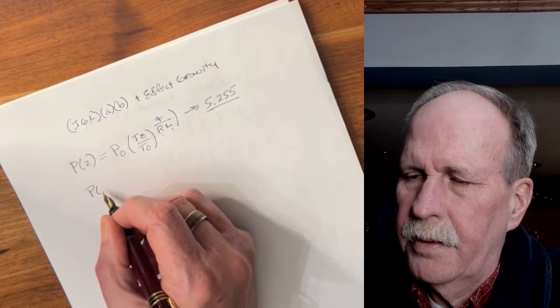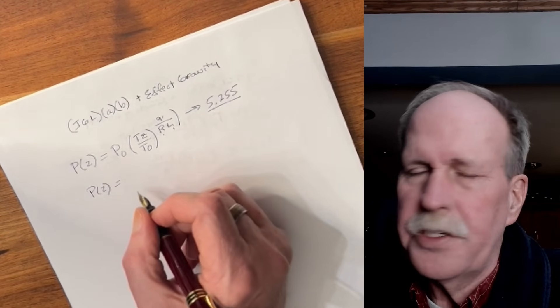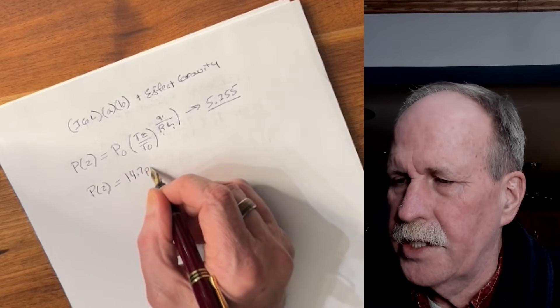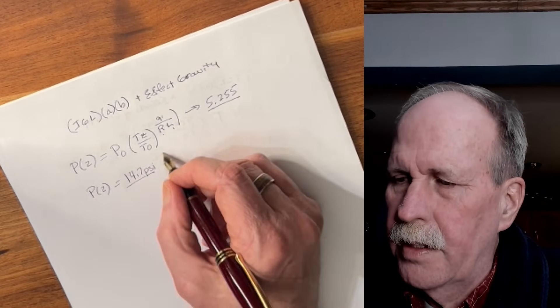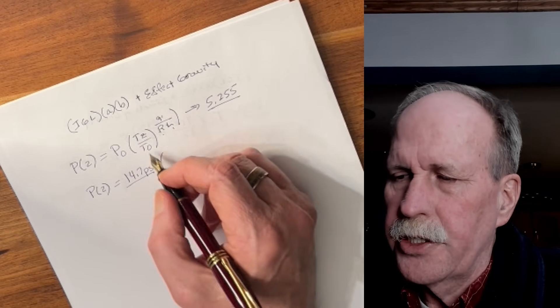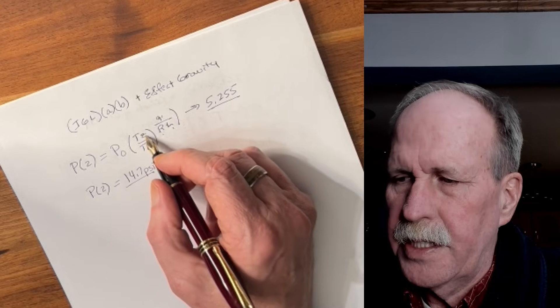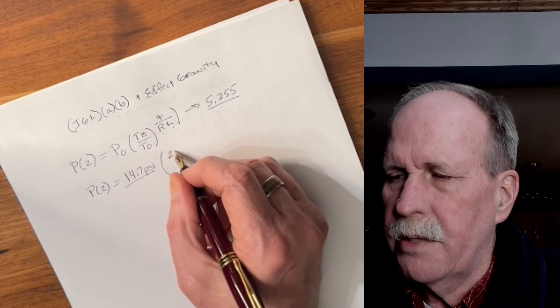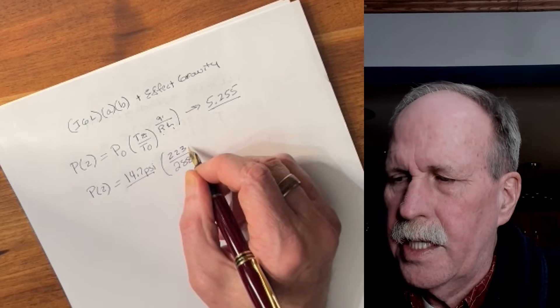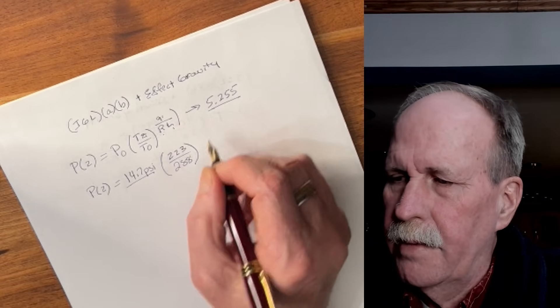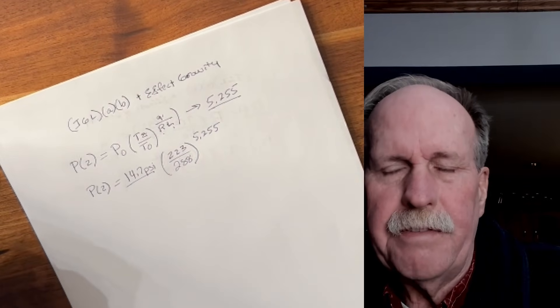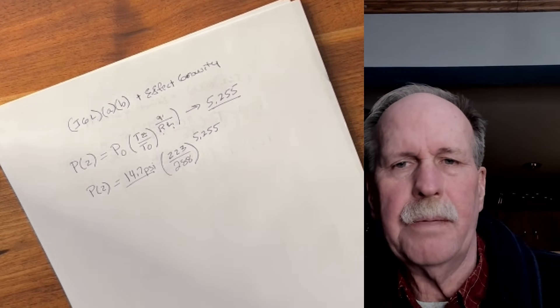So Pz is going to be the pressure at the surface of Earth. We'll just use 14.7 psi. That's sea level pressure. We're going to multiply that by this ratio, the temperature at altitude, which we said was 223 Kelvin, over the temperature at the surface, which is 288. And then we're going to raise this whole mess to 5.255. Let's go ahead and see what that comes up as.